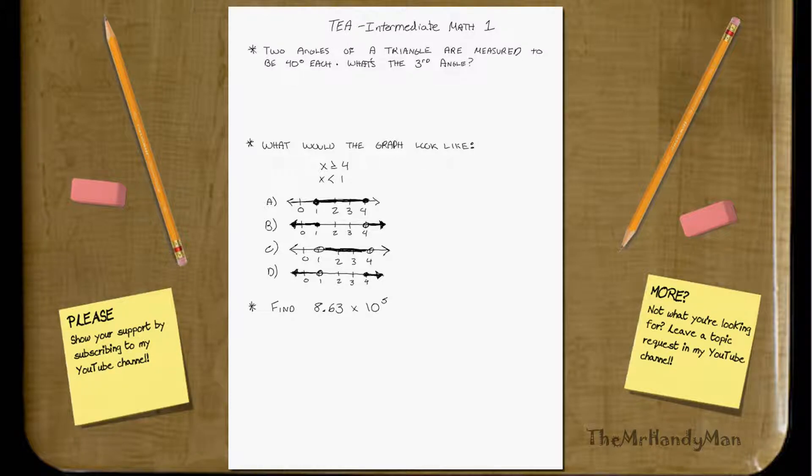Two angles of a triangle are measured to be 40 degrees each. What is the third angle?